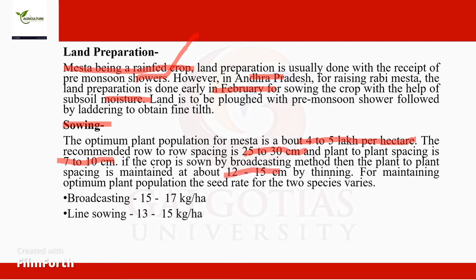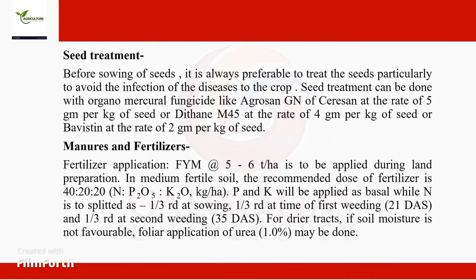For maintaining optimum plant population, the seed rate for the two species varies. For broadcasting, we need a seed rate of about 15 to 17 kg per hectare. For line sowing, we require 13 to 15 kilograms per hectare. Seed treatment can be done by a solution called Dithane M-45 at the rate of 2 grams per kg of seed.